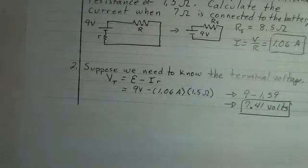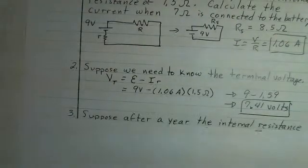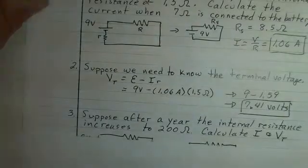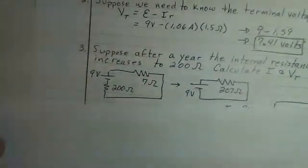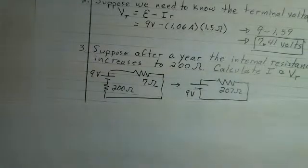So not at 9, because we do have internal resistance. Now, this battery has been used, not well taken care of, and later we find that the internal resistance is 200 ohms. Now let's calculate the current and the terminal voltage.